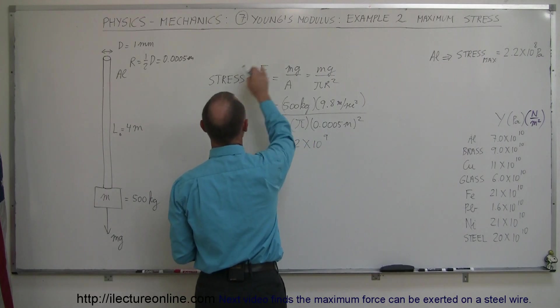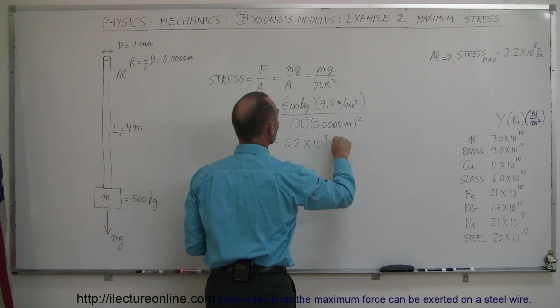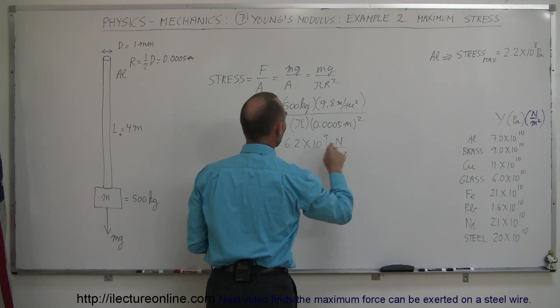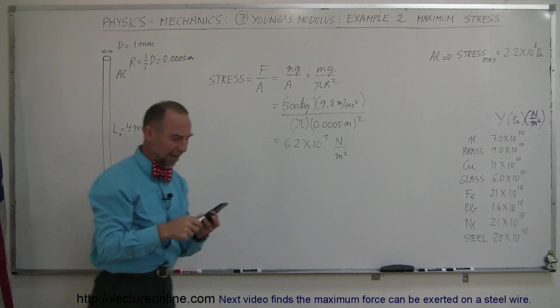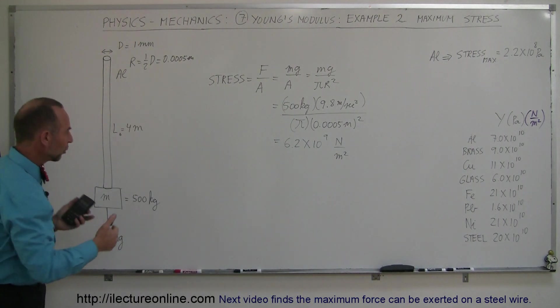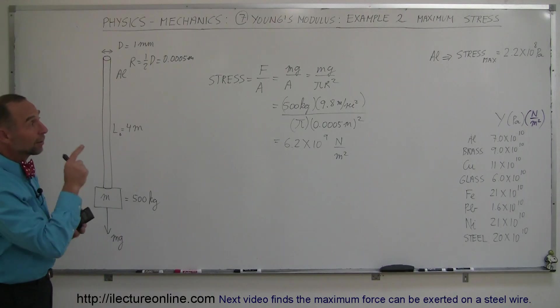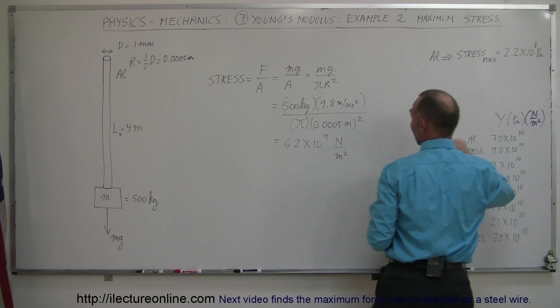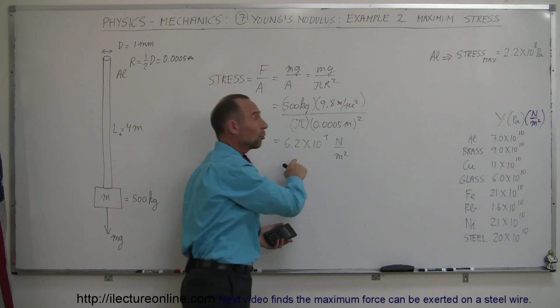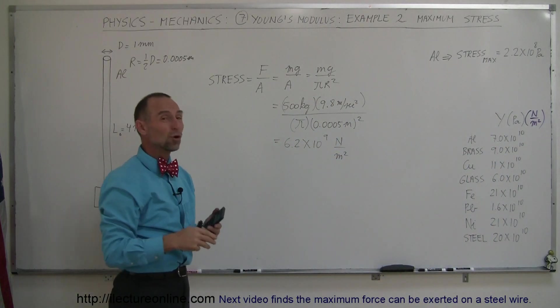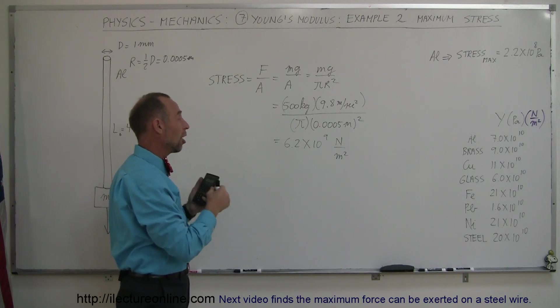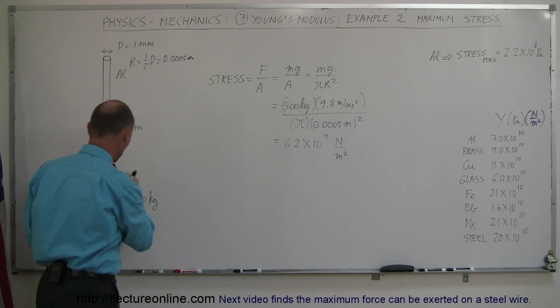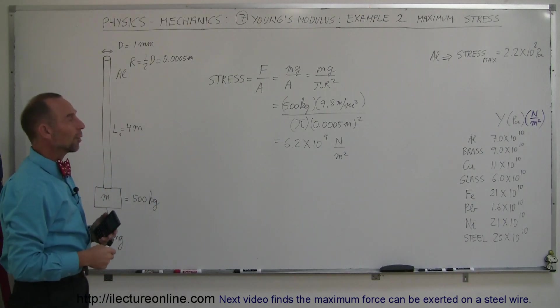And of course, stress is force per unit area, which is newtons per square meter. So that's how much stress that mass hanging from that wire would exhibit itself on the wire. Now, what is the maximum stress aluminum can handle? 2.2 times 10 to the 8th. Well, 6.2 is almost 30 times as much. So no question that wire will break long before you have the full weight of this mass pulling down on the wire.